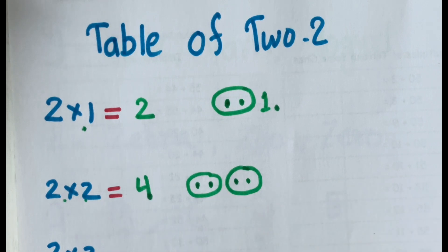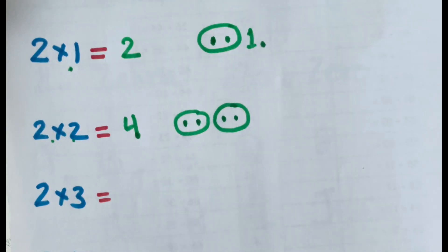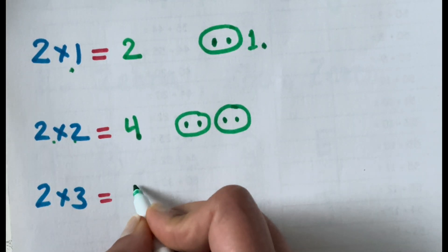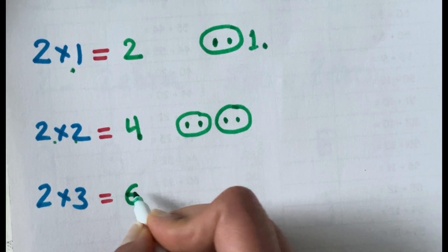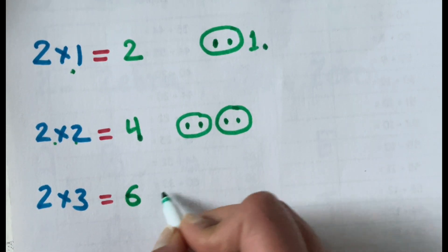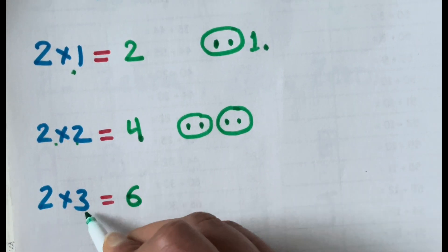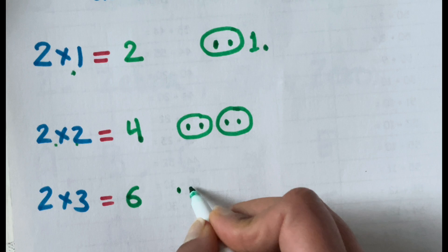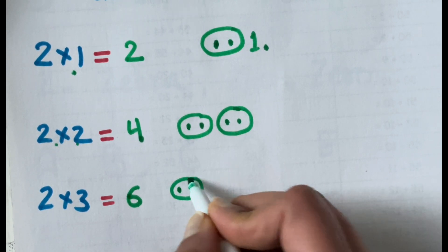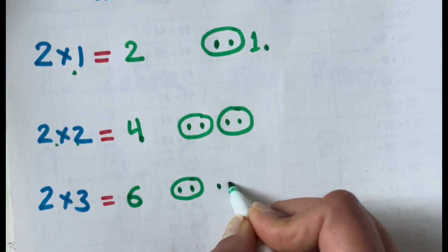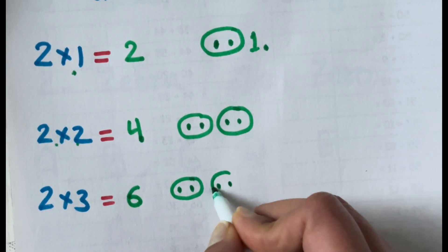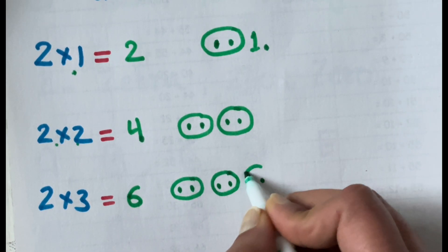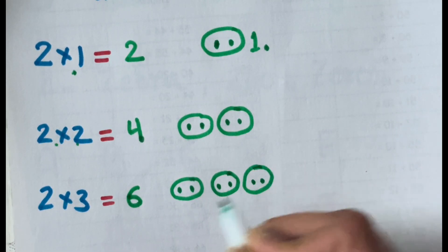1, 2, 3 and 4. 2 times 3 is 6. That means 3 groups of 2. 1, 2 — 1 group. 1, 2 — 2 groups. And then 3 groups.